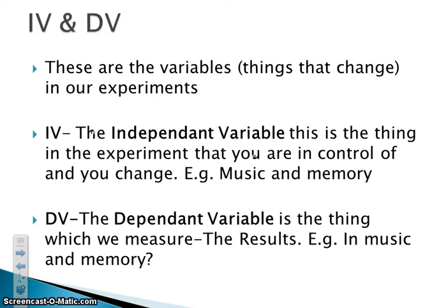The dependent variable is the thing that we are measuring — in other words, it is the result. So in the effects of music on memory, we will be testing memory in some way, shape, or form. We alter the IV to see what effect it has on the DV: which of these two conditions, music or no music, will improve memory scores?